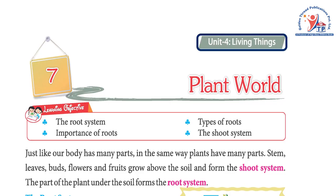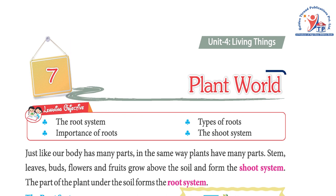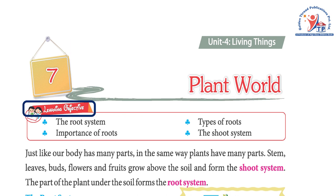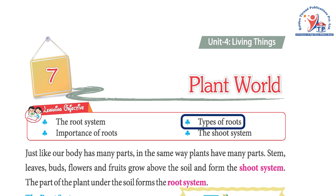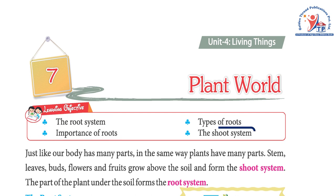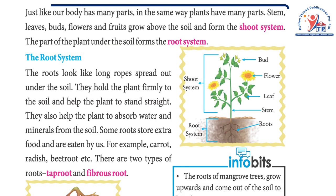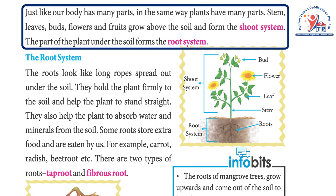Unit 4: Living Things, Chapter 7: Plant World. Learning objective: the root system, types of roots, importance of roots, and the shoot system. Just like our body has many parts, in the same way plants have many parts.